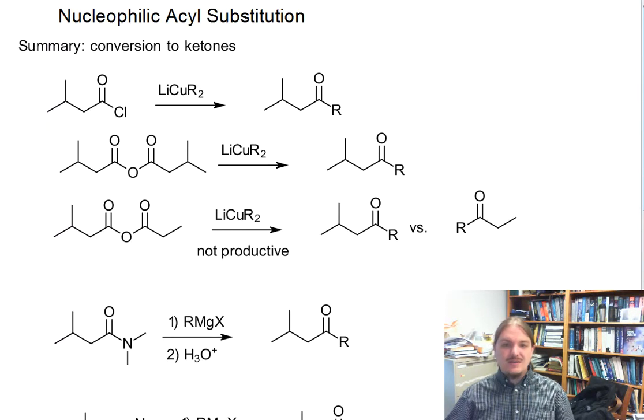So, very quick summary. Lithium dialkyl cuprates, the Gilman reagents, react with acid chlorides and anhydrides to make ketones, though one of these reactions is not productive. The cuprate reagents react with no other carbonyl electrophiles that we've covered, so they're pretty selective for just acid chlorides and anhydrides.